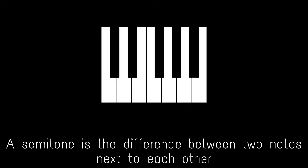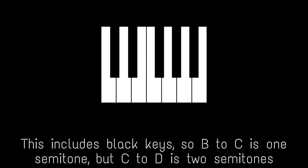You may also notice A is three semitones behind C. A semitone is the difference between two notes next to each other. This includes a black key, so B to C is one semitone but C to D is two semitones. So if you place a C major it forms the minor of the note three semitones back — in this case it's A minor. You can use this the other way around too. If you want A minor, we can move three semitones up and place a C major scale. This is called the natural minor scale.